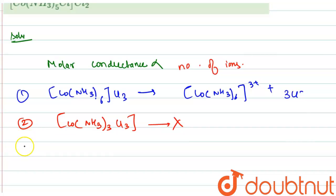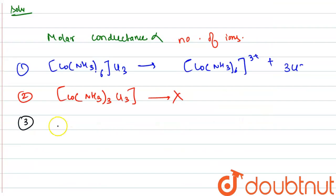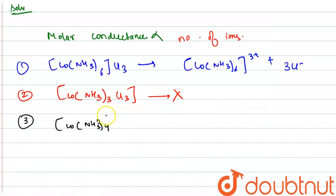The third option is [Co(NH3)4Cl2]Cl. It will dissociate into [Co(NH3)4Cl2]+ plus Cl-. So as you can see, this third complex salt will dissociate into two ions.